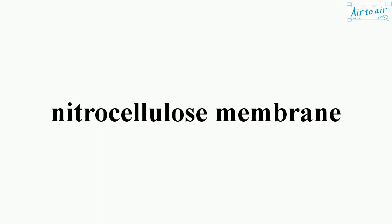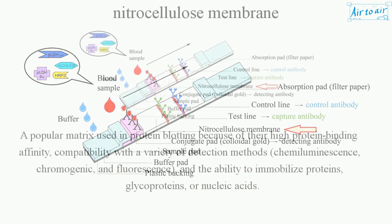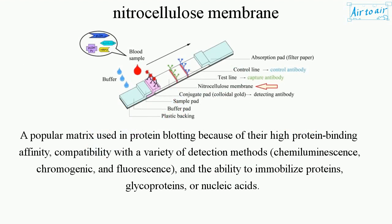Nitrocellulose membrane is a popular matrix used in protein blotting because of their high protein binding affinity, compatibility with a variety of detection methods — chemiluminescence, chromogenic, and fluorescence — and the ability to immobilize proteins, glycoproteins, or nucleic acids.